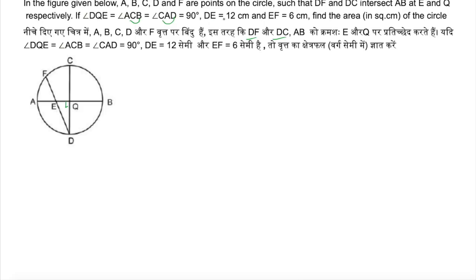DE is given as 12 and EF is given as 6. So I will zoom in — we have to find the area of the circle, and the area of the circle is pi R squared. So we have to find the value of R squared.